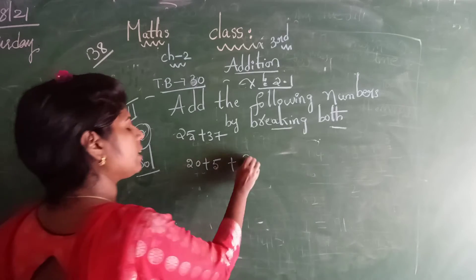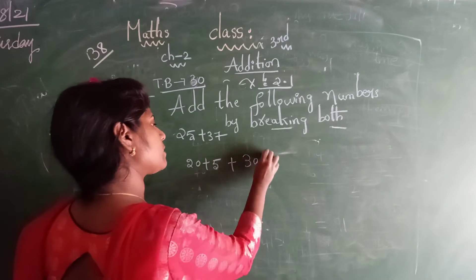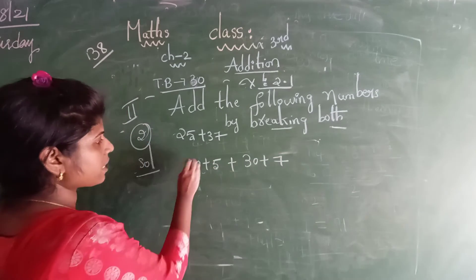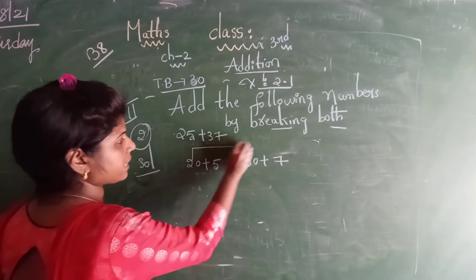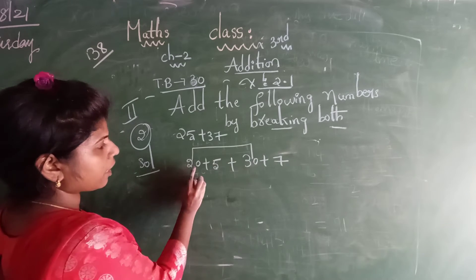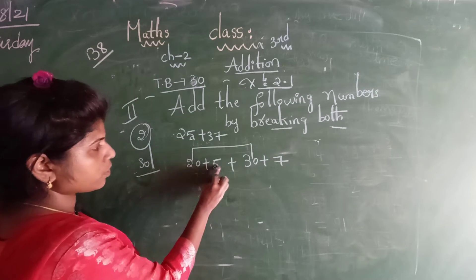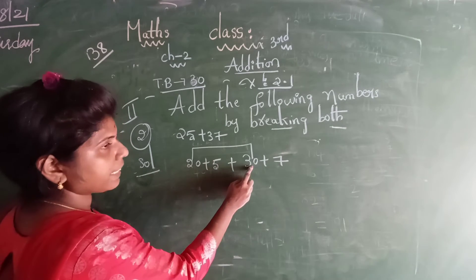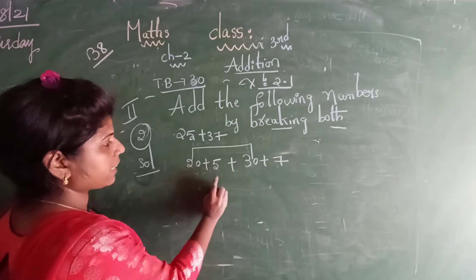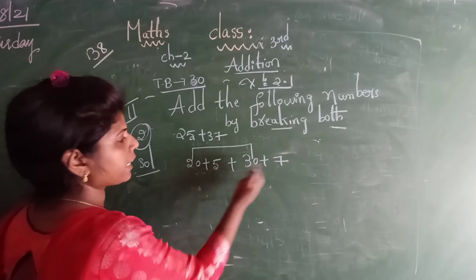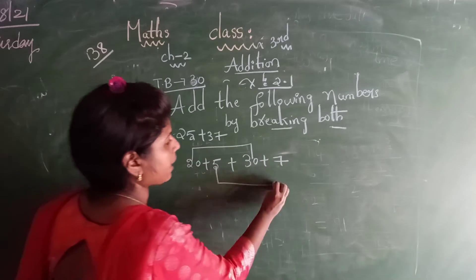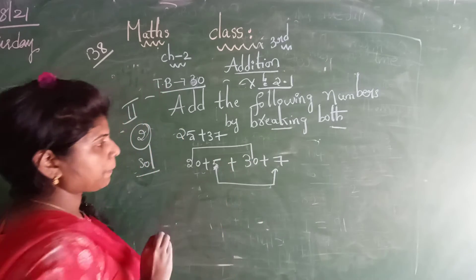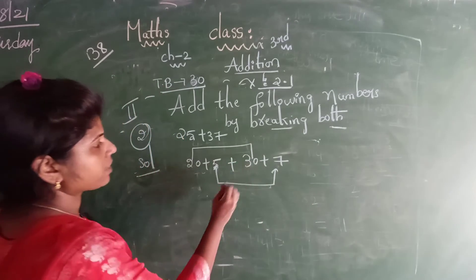Okay. 20 plus 5, 30 plus 7. Here we go. First digit, second digit, third digit, fourth digit. 1 and 3 indicate change, 2 and 4 indicate change. Okay, here we go — first digit.